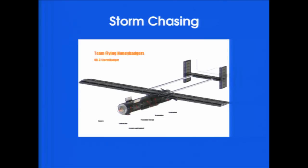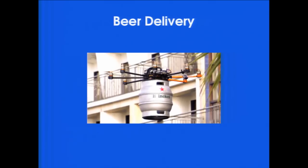Another thing: storm chasing. This is designed to fly right into tornadoes or hurricanes and get data — much safer for the pilot, obviously. Beer delivery — a very important one. This was a bar in England, right on a beach, and they decided to do this little promotional thing where they'll fly a full quarter barrel — yes, a full quarter barrel, not an empty one — with an octocopter, flying either a six-pack or a quarter barrel right out to you on the beach.